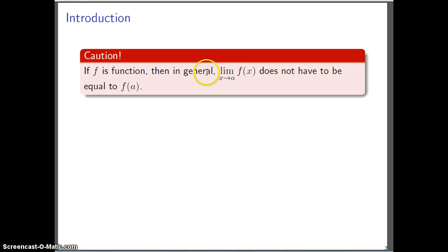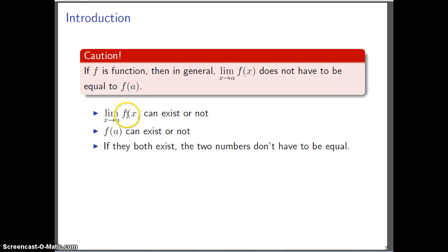If you have a function in general, this limit does not have to be equal to this f of a. So to explain this just a little bit more, the limit of f as x approaches a could exist or not. And then f of a could exist or not. Now if they both exist, they're both numbers, but these two numbers don't even have to be equal.